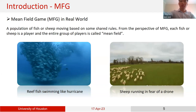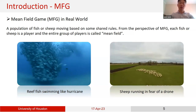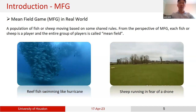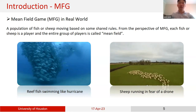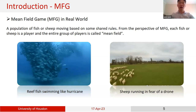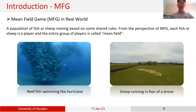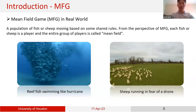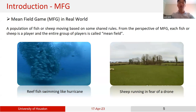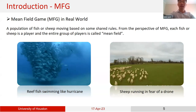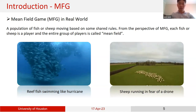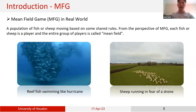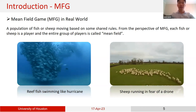Now I want to introduce Mean Field Games in the real world. Compared with traditional games, Mean Field Games is the decision-making of a large number of players. The major difference between Mean Field Games and traditional games is the number of players. In our daily life, there are several scenarios that show the characteristics of Mean Field Games — for example, a group of reef fish swimming like a hurricane, or ships running in fear of a drone.